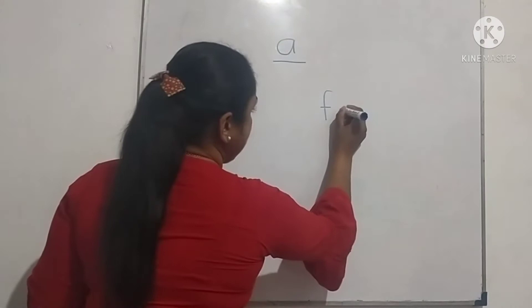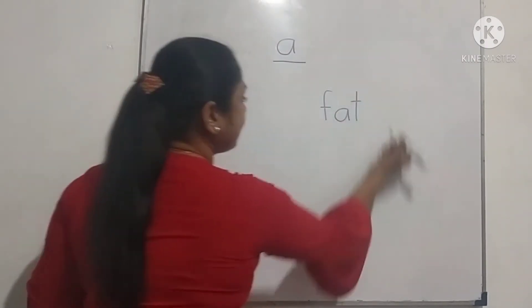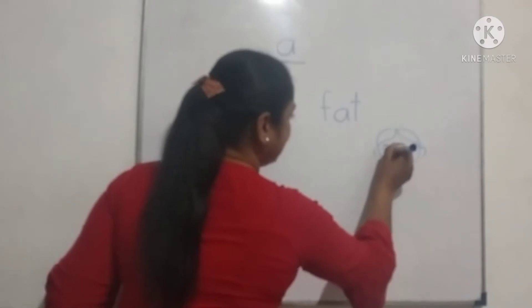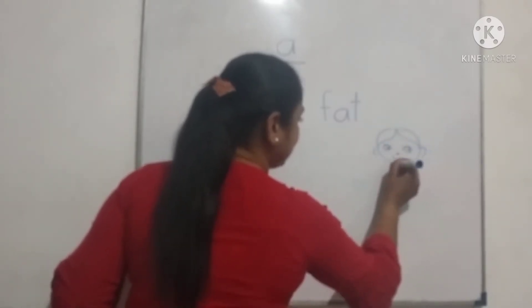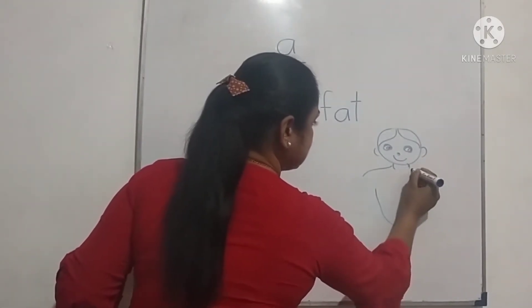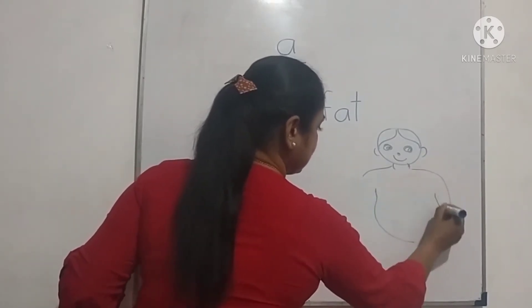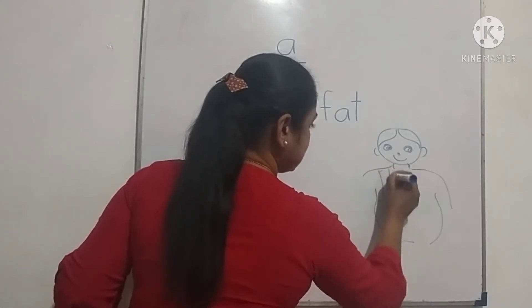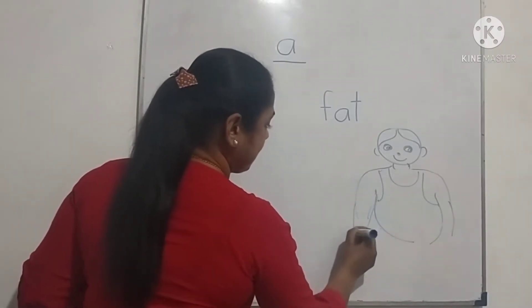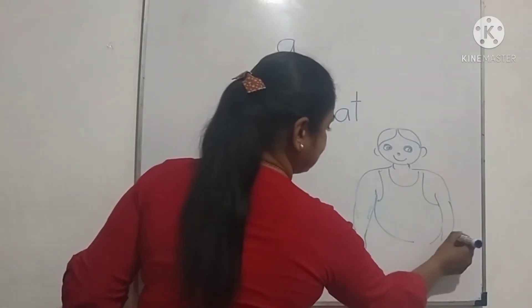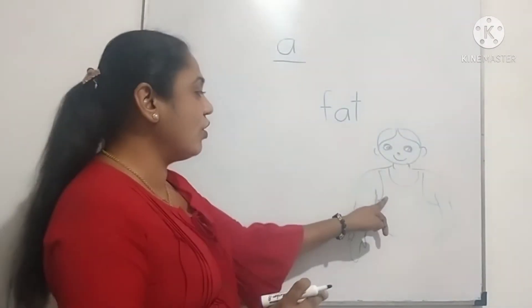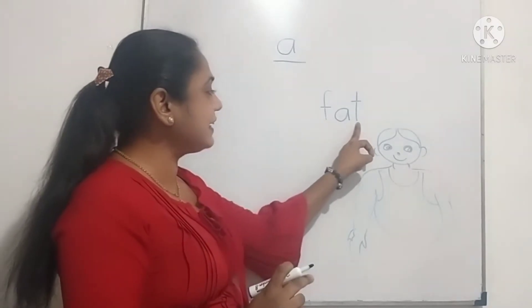F, A, T — Fat. Oh, fat boy! Fat boy. Look at the word: Fat. F, A, T — Fat. Right. Fat. F, A, T — Fat.